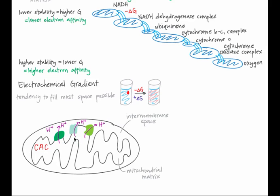So hydrogen ions can't simply move back into the matrix to spread out. Instead, the hydrogen ions accumulate in one space, storing potential energy. Some hydrogen ions would, if they could, move across the inner mitochondrial membrane so that the concentration of hydrogen ions is the same on either side. That movement would be spontaneous and thus would release energy.